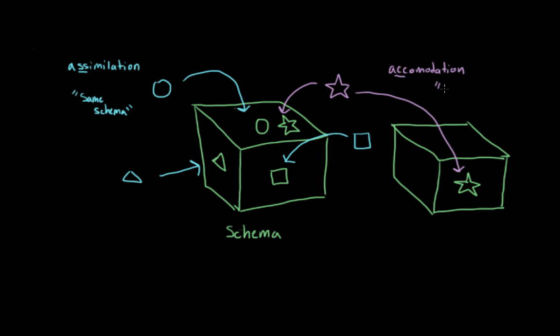Accommodation has two C's, which you can think of as standing for change and create, or cases where you have to change an existing schema or create a new one.